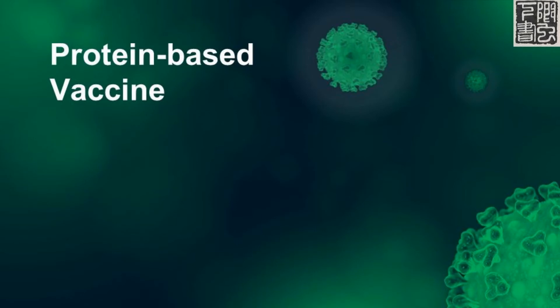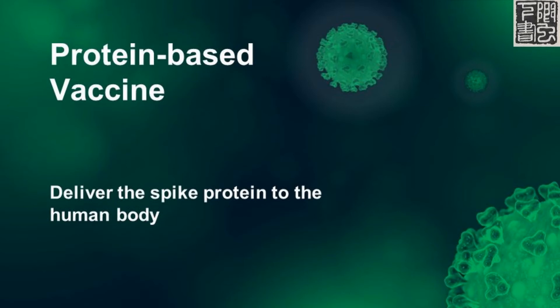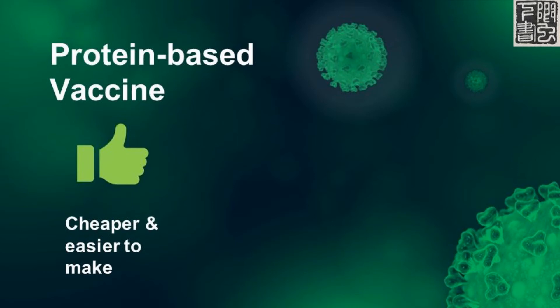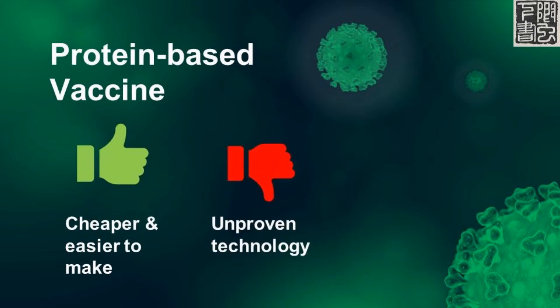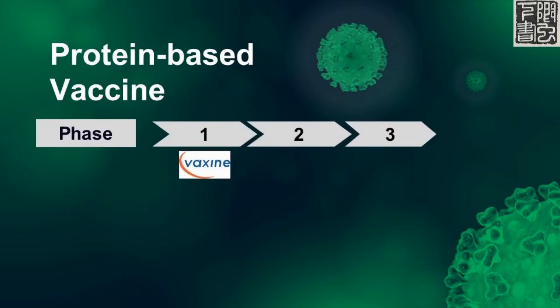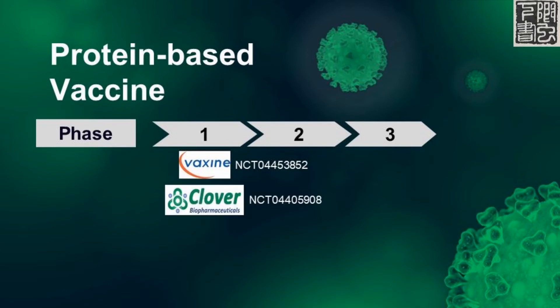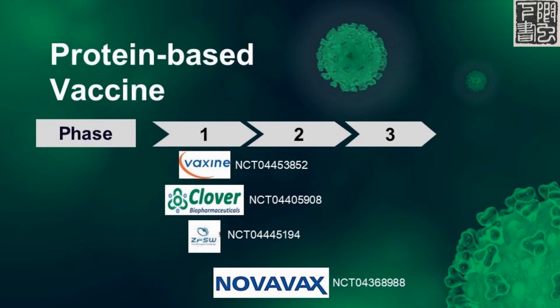Instead of delivering the DNA or RNA to make the spike protein in antigen-presenting cells, the protein-based vaccine delivers the viral protein directly. The technology is cheaper and easier to make than conventional vaccine; however, it is relatively unproven with no commercial product. Vaxine, an Australian company, is making a vaccine consisting of COVID spike protein and its proprietary adjuvant, which activates the immune system without causing excessive inflammation. Clover Biopharmaceuticals is making a vaccine consisting of trimers — three of the same parts of the COVID spike protein. Anhui Zhifei Biopharmaceuticals in China has a trial in Phase 1. Novavax, an American company, combines the spike protein with its proprietary adjuvant Matrix M in its vaccine, which is in a combined Phase 1 and 2 trial.